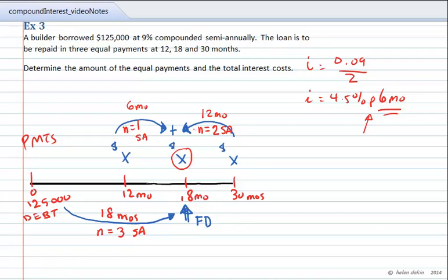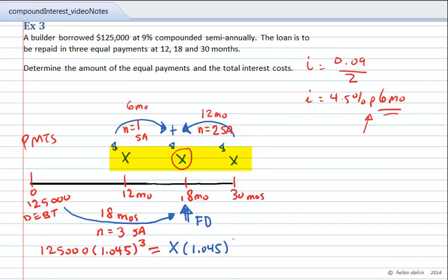For the deflated amount, we use a negative N exponent in the equation of values. So our equation is: $125,000 × (1 + 4.5%)³ equals X × (1 + 4.5%)¹, plus X, plus X × (1 + 4.5%)⁻². That is our complete equation of values.